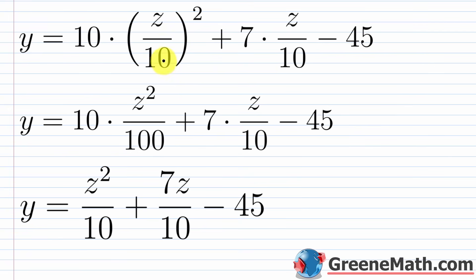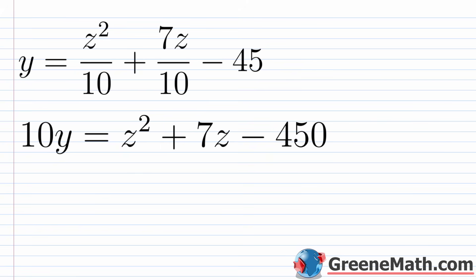Squaring z/10 gives z²/100. So the expression becomes 10·(z²/100) + 7·(z/10) − 45, which simplifies to z²/10 + 7z/10 − 45. Multiplying both sides by 10 gives 10y = z² + 7z − 450. Notice: the leading coefficient has been slid away and what remains is the ac value −450 as the constant — exactly the slide step.